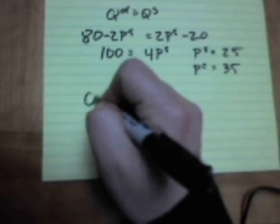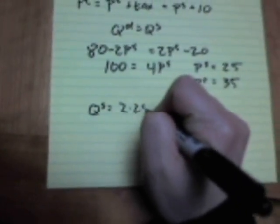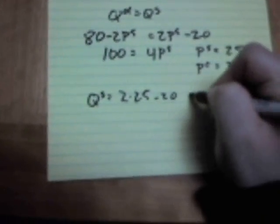So let's double check, get our quantities. Quantity supplied: producers have 2 times the price they get to keep, minus 20. 2 times 25 minus 20, or 30. How about consumers?